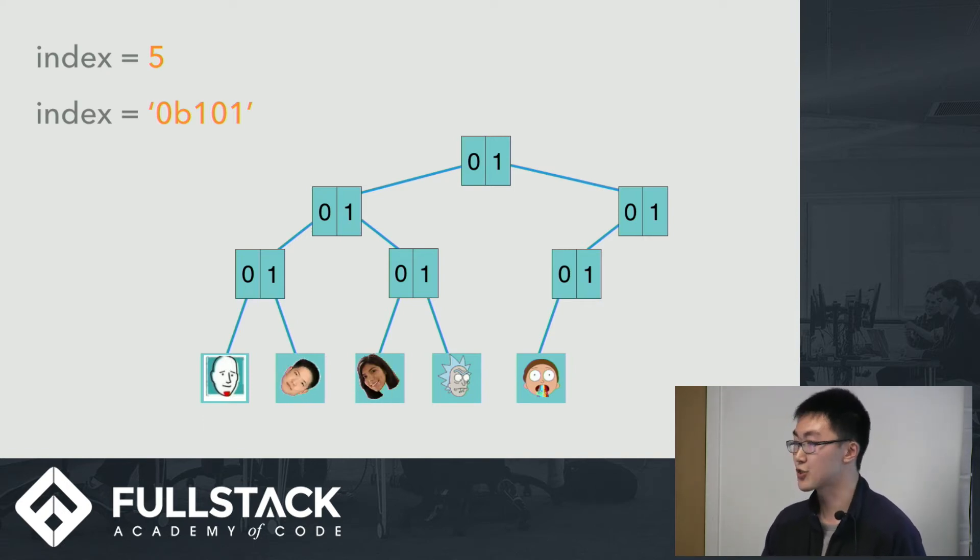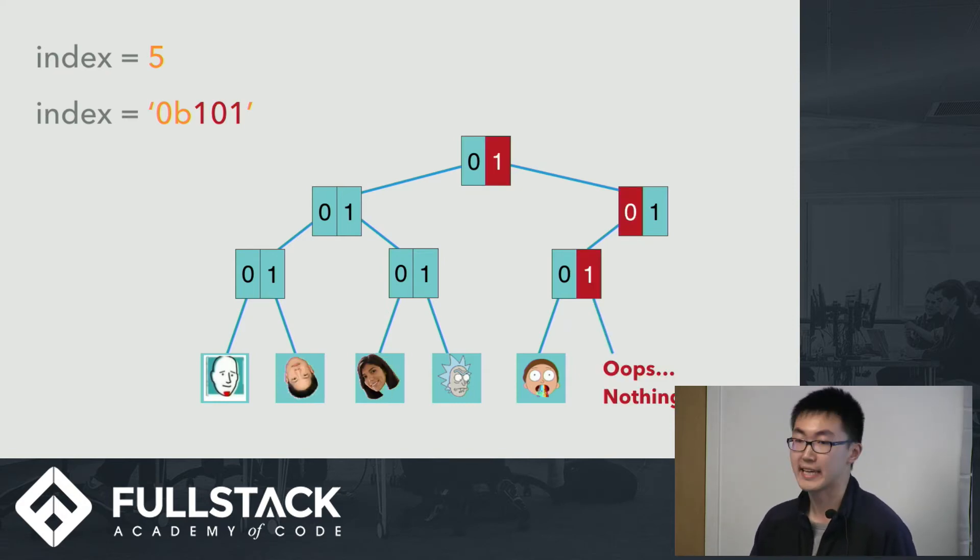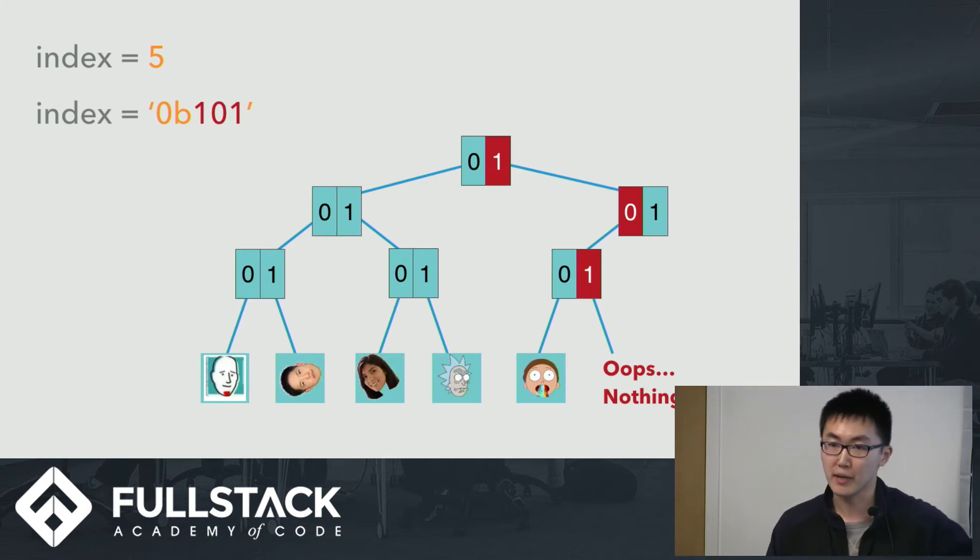And what we will do then is just traverse down the trie, digit by digit. One, zero, one. Then we get to the sixth element, and we see, okay, there's nothing there. And that's pretty good, because we just performed a lookup operation that is logarithmic instead of linear. So that's some performance in terms of lookup. So that's lookup. What about copying and making changes?